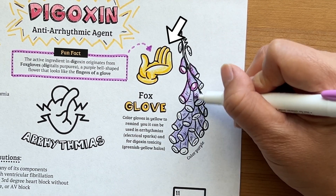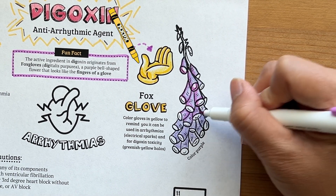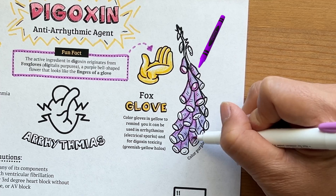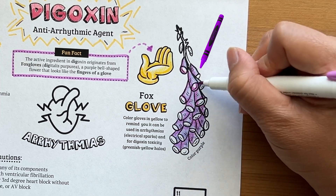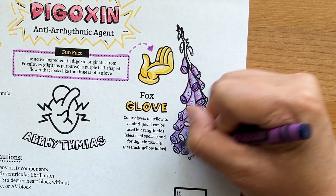Let's color the gloves in yellow to remind us that digoxin can be used in arrhythmias, and let's color the foxglove flowers in purple to remind us of digitalis purpurea.